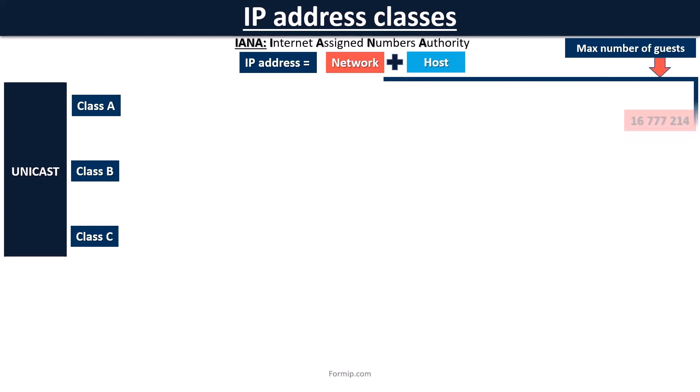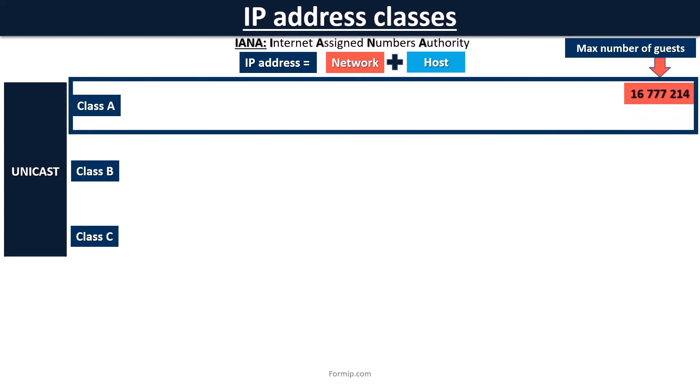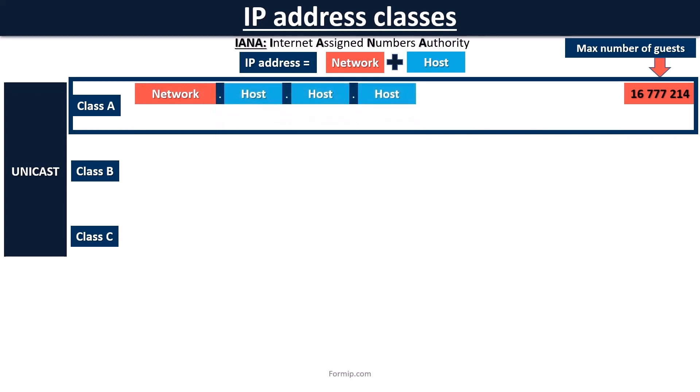Class A is an address class which is designed to support extremely large networks with over 16 million host addresses per network. It only uses the first byte to indicate the network address. The remaining three bytes are used for host addresses.